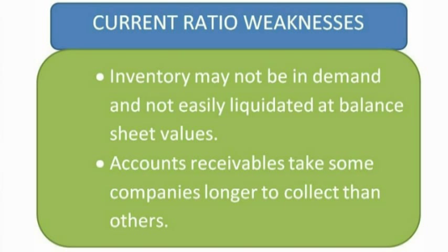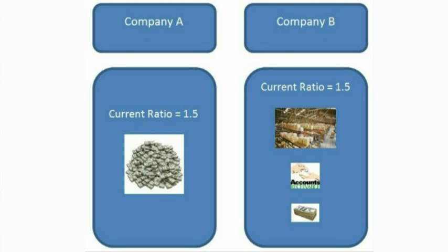There are many weaknesses in the current ratio. Even though a company has a higher current ratio, it doesn't always mean it is the most liquid, because the current ratio includes accounts other than simply cash. Two companies could have the same current ratio but vary greatly in liquidity. For example, if Company A and Company B both had a current ratio of 1.5, but Company A's current assets consisted mostly of cash while Company B's consisted mainly of inventory and accounts receivable, Company A would be very liquid while Company B might have trouble meeting its obligations — especially if it takes longer to collect on accounts receivable. Other ratios like the quick ratio and cash ratio attempt to find a more accurate measure of liquidity.